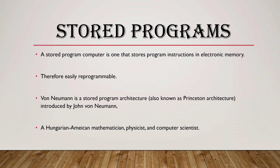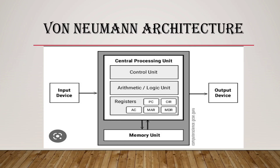Here you can see the diagram of Von Neumann's Architecture. The Von Neumann Architecture diagram typically consists of four main components. First, the Central Processing Unit, which is responsible for executing instructions and performing calculations. It comprises two primary sub-components: the Arithmetic Logic Unit and the Control Unit.